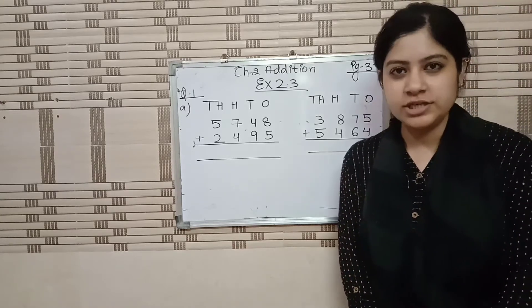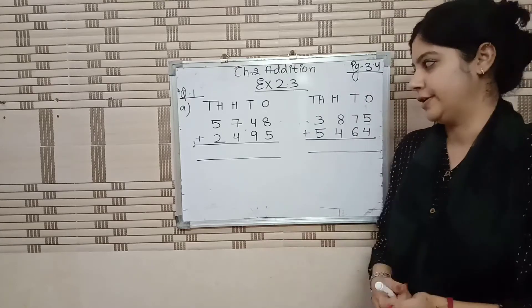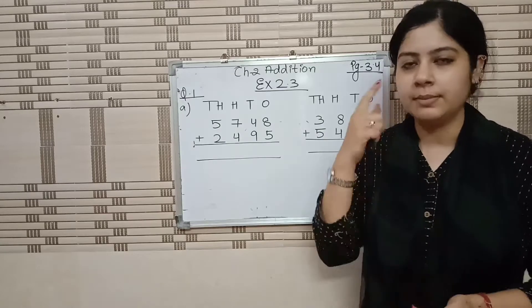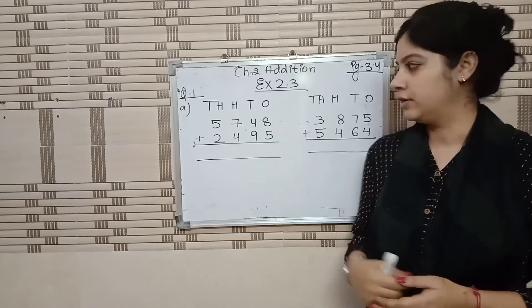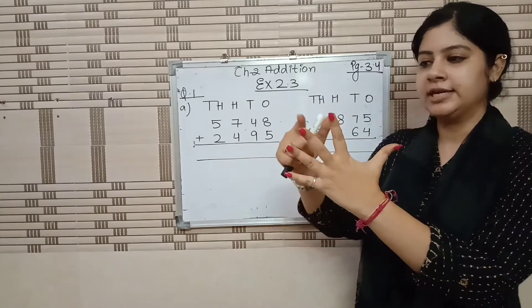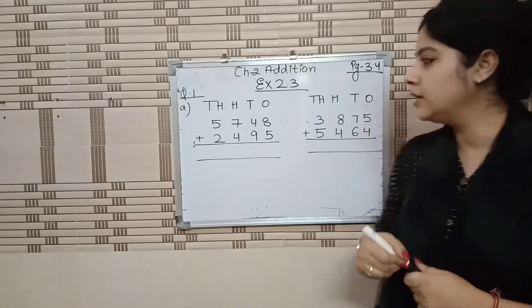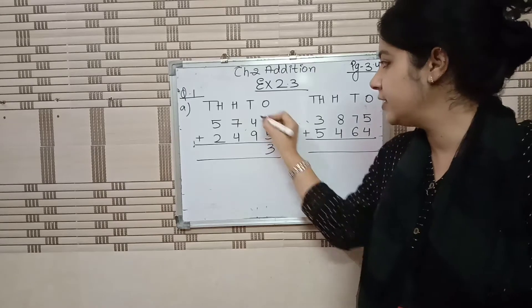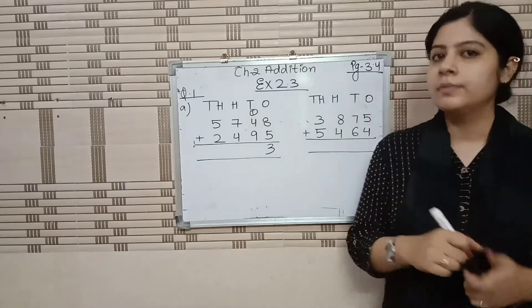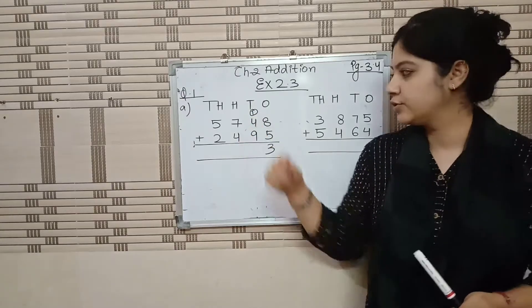It's a 4-digit addition with carryover. We will do carryover. Simple addition, like we do — greater number in our mind and smaller number on the finger. So 8 in our mind, 5 on our finger: 9, 10, 11, 12, 13. 13 is a 2-digit number. So 3 over here and 1 carry forward. If you have a number in the tens place, you carry forward. So 3 is on the ones place, 1 is on the tens place — carry forward.